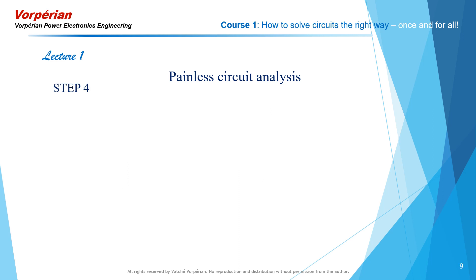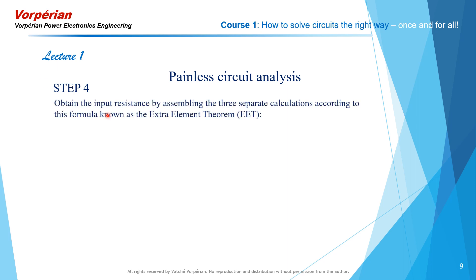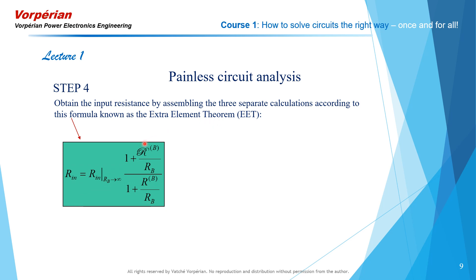Step four. We are now going to write the complete expression of the input resistance by assembling these three separate calculations according to a formula given by the Extra Element Theorem. Here's that formula — we're not going to prove it right now. We have the partial credit answer, the first resistance looking back into port B with the input port shorted, and the second with the input port open. RB is the bridge resistance we took out by letting its value go to infinity. If RB goes to infinity, both correction terms drop out and the input resistance coincides with the value obtained with RB at infinity, so the formula makes sense.